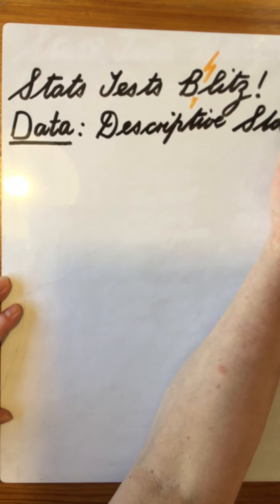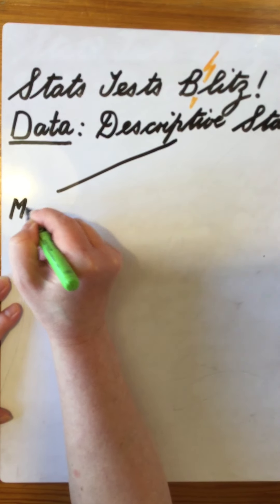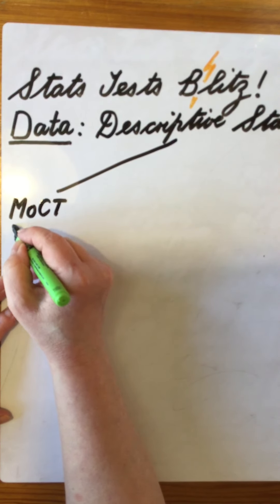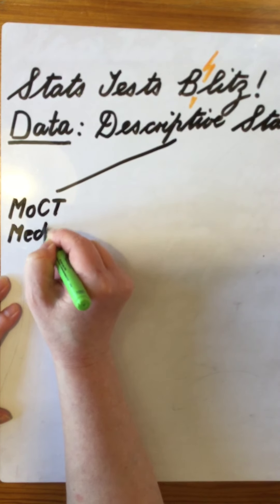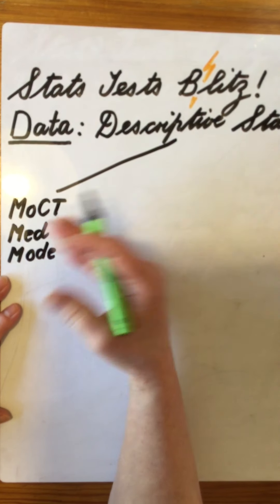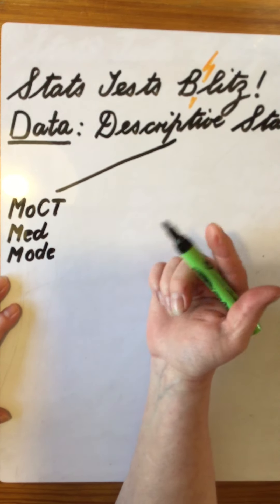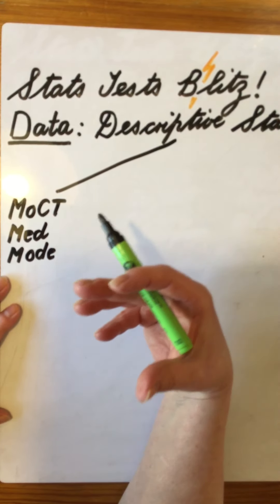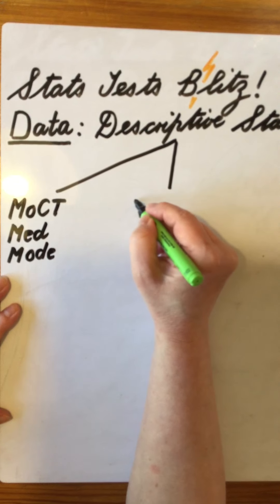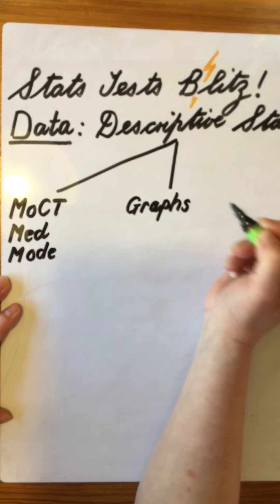Descriptive statistics refer to things like measures of central tendency. So we're looking at averages — we look at mean, we look at median, we look at mode. They show us what the average for each condition is and give us an idea of whether our hypothesis looks like it's turning out the way we want it to.